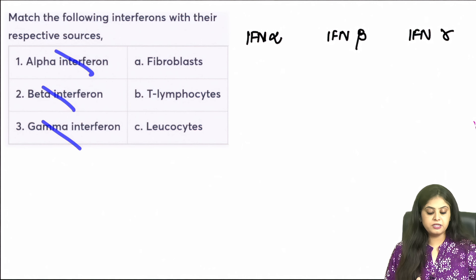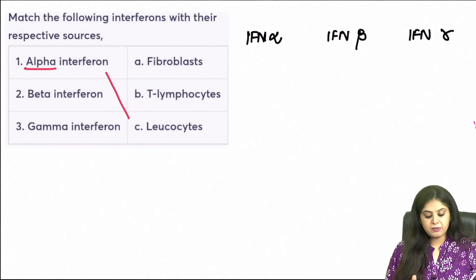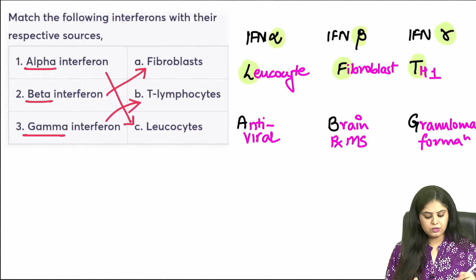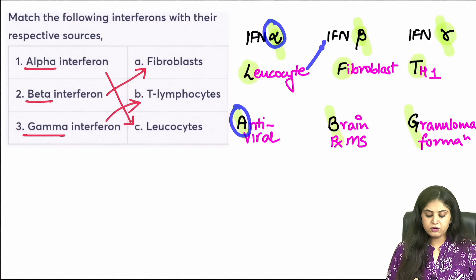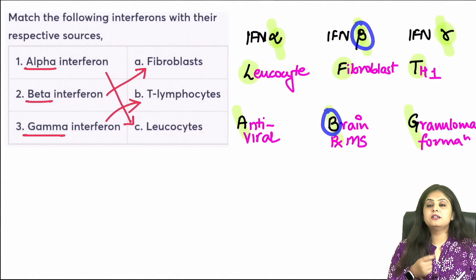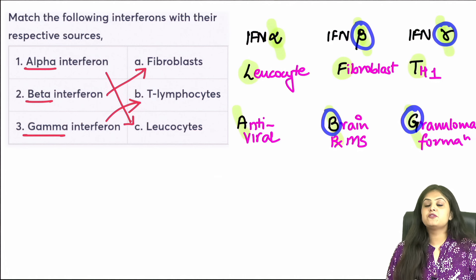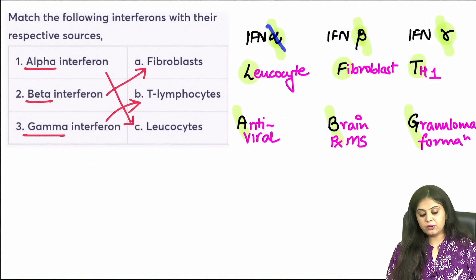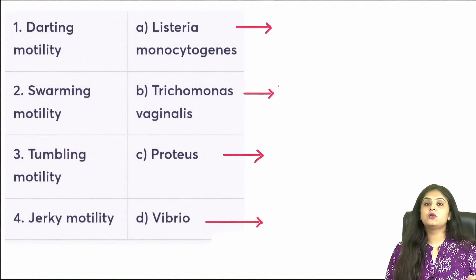Moving on to interferons — a little immunology. Interferon alpha, beta, gamma matched with their respective sources using the mnemonic LFT: alpha comes from L — leukocytes; beta comes from F — fibroblasts; gamma comes from T — T helper 1 cells. Their functions: interferon alpha has antiviral properties; interferon beta can also be antiviral but is used for treating multiple sclerosis; interferon gamma is important for granuloma formation — in TB, T helper 1 cells release interferon gamma, which causes granuloma formation.